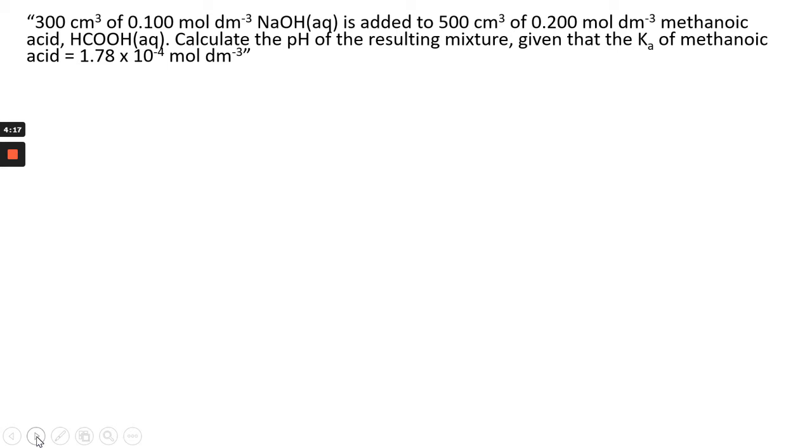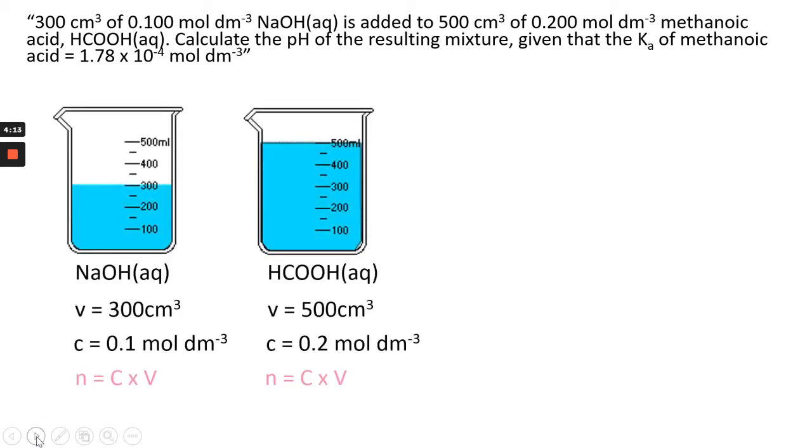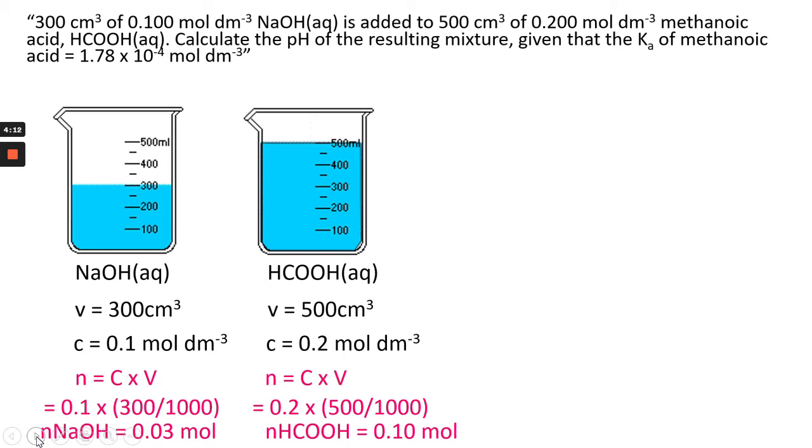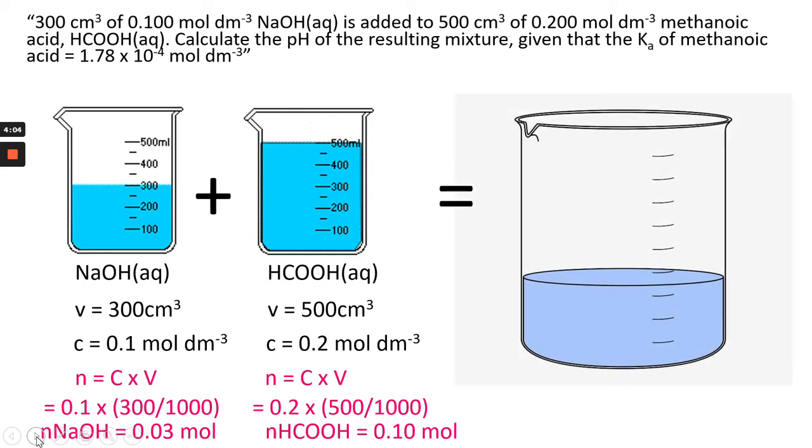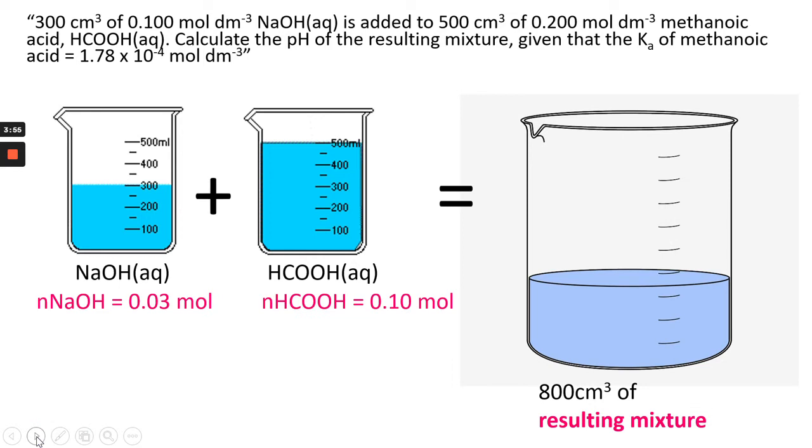So let's look at this example. Imagine two beakers, and you take the data from the question, and you work out the actual moles of each separate component. You then add them together, and you get a combined volume. And the combined volume is 800 cm cubed, because obviously you have 300 in one beaker, and 500 in another.